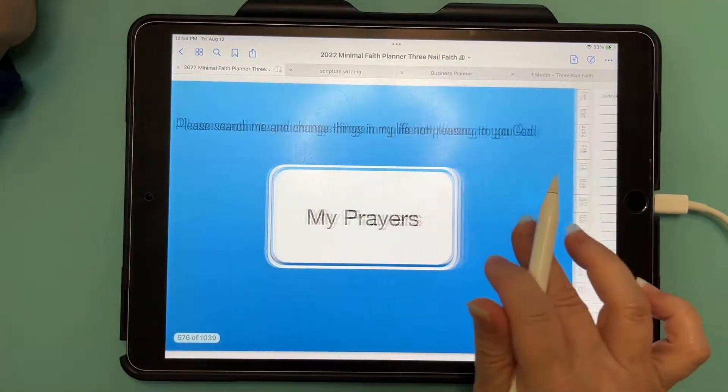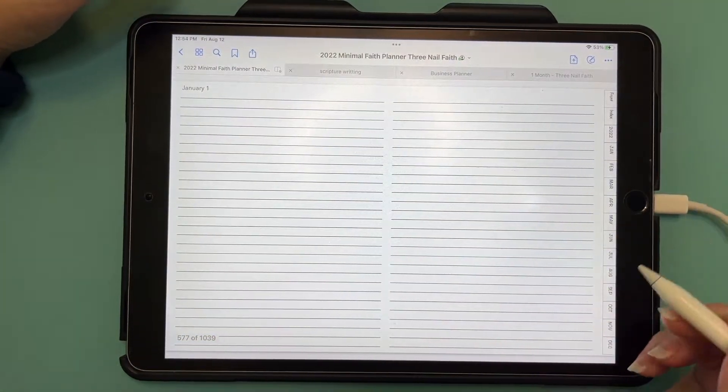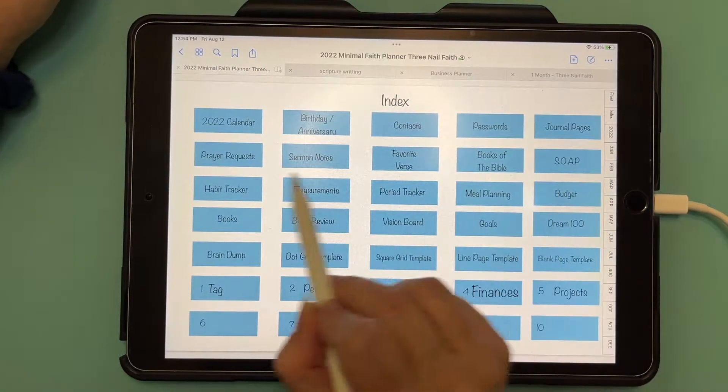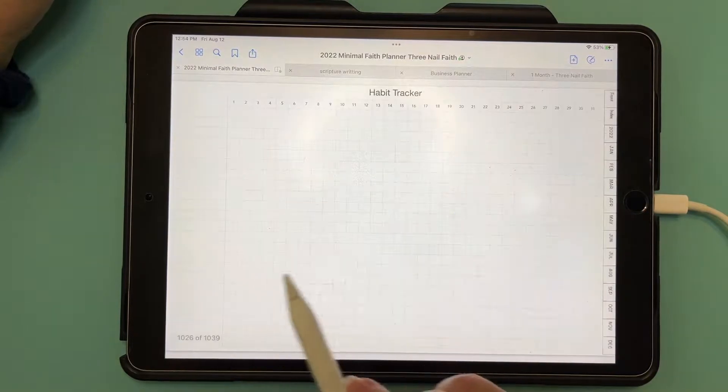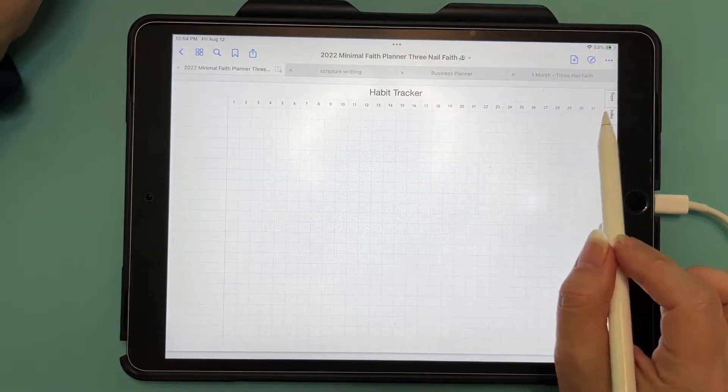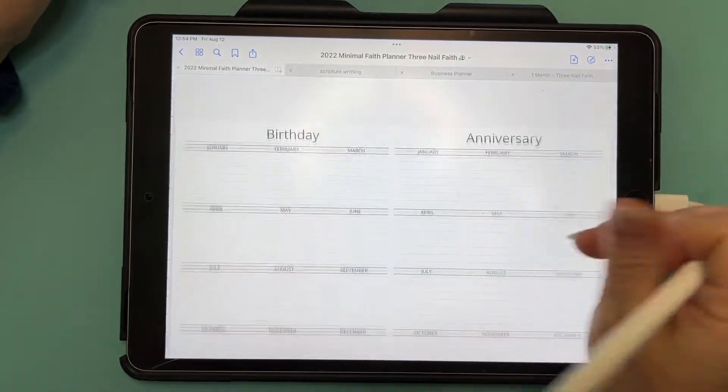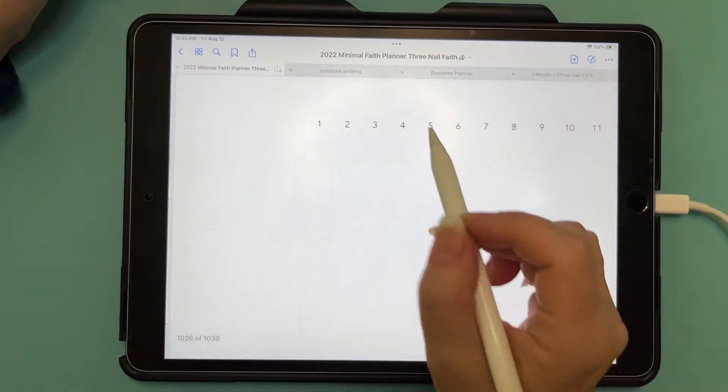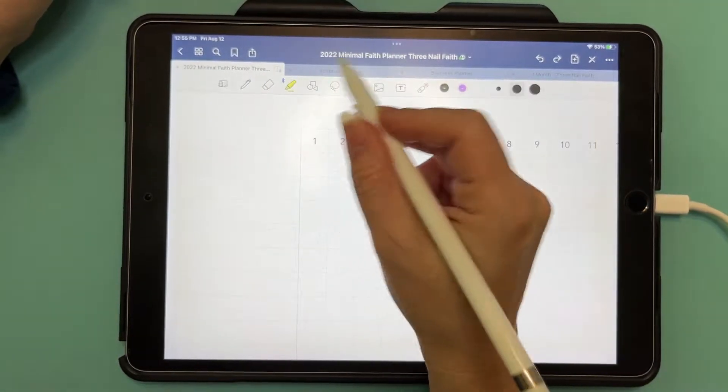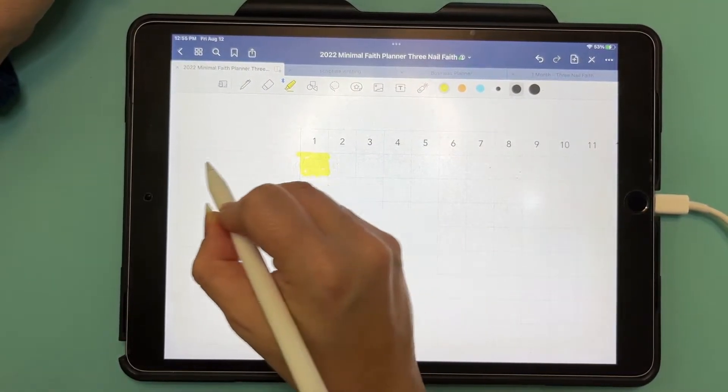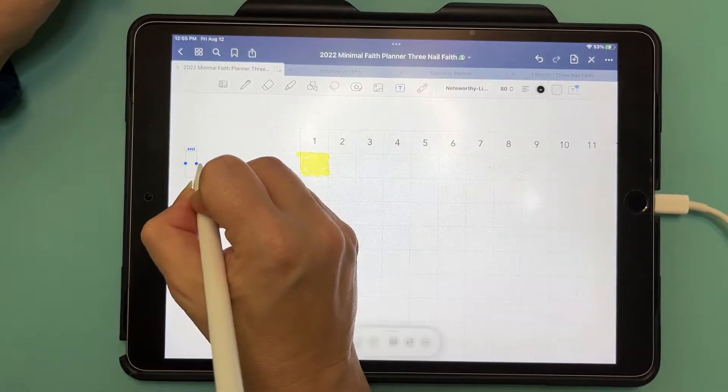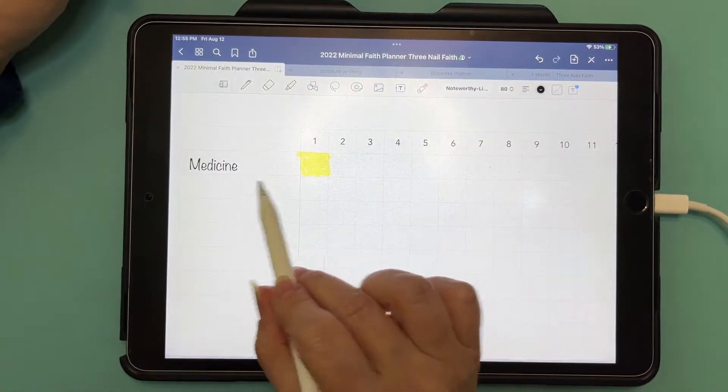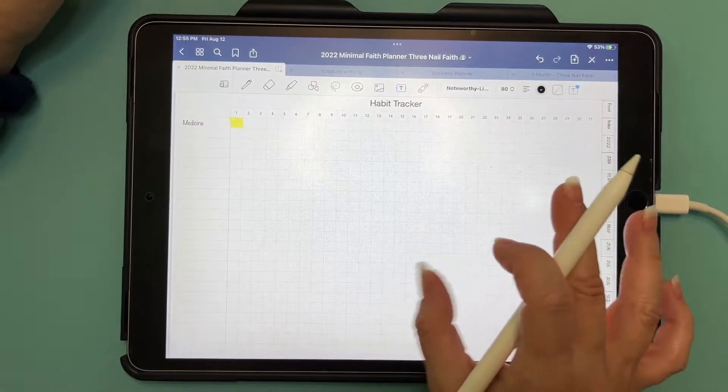The habit tracker. So we have a habit tracker one through 31. There's little boxes that you can, just like we did with the Bible, you can fill in. Say you want to track medicine and you want to make sure you take your medicine every single day. That's your habit tracker.